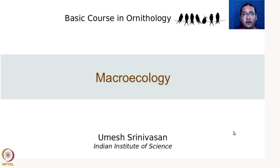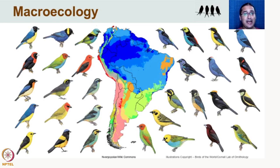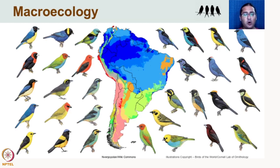Welcome back to Basic Autothology where today we will be talking about macroecology — looking at patterns of species richness and species diversity across large spatial scales, across continents, across the world. For example, why are there so many species of tanagers in South America? Why are some species found in certain areas? Why is tanager diversity high in parts of the Andes versus the Amazon basin? Macroecology deals with the distribution of species and diversity across very large spatial scales.